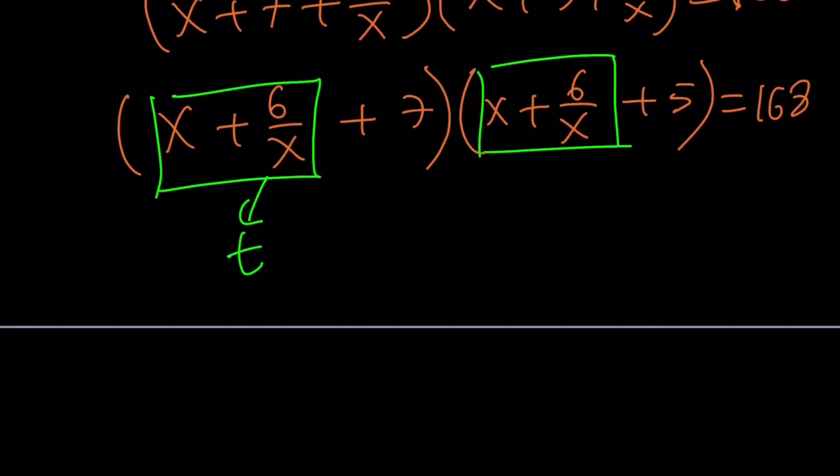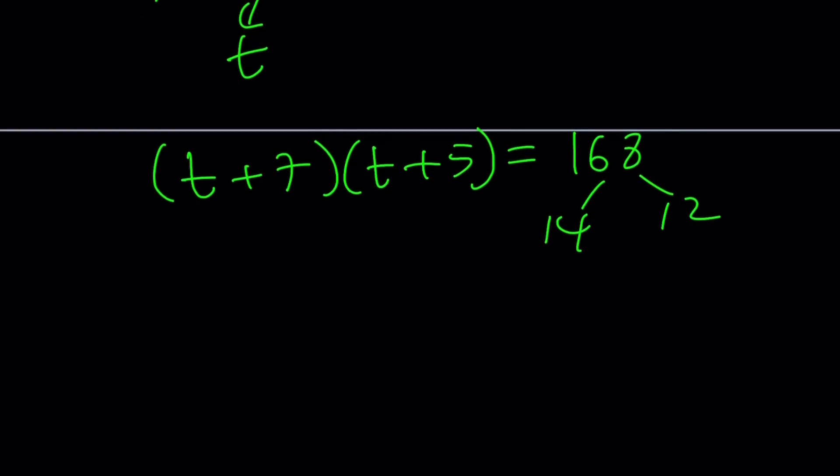Now, we're going to call this t. Any variable will do. t plus 7 times t plus 5 is equal to 168. At this point, you can use a quadratic formula, or think about how 168 can be factored such that its factors are two apart. Let's look at it that way. And I immediately see, I don't know if you've seen it, but 14 times 12 is 168. So if this is 14, this is going to be 12. That gives us t equals 7.